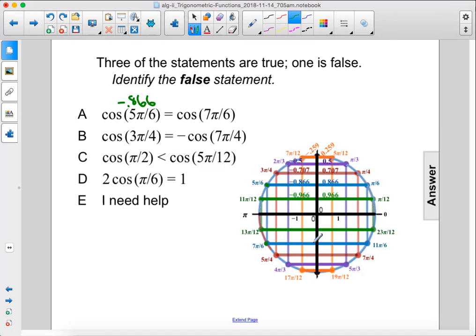Yes, those are the same. They have the same blue line, and they're both negative. Negative 0.866, so this is true. We can eliminate it.